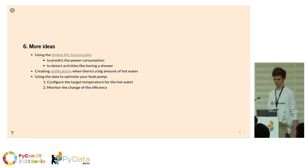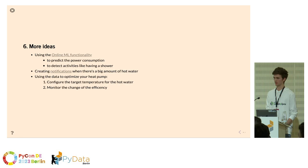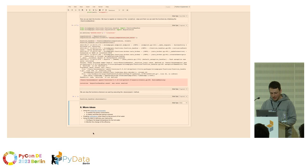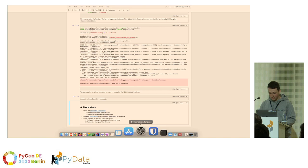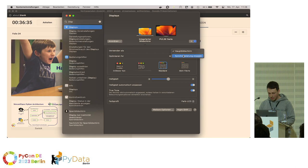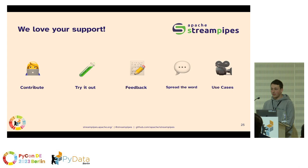That's all for this demo. There's a lot more you could do: you could use the online machine learning functionality to get more information about the data, you could easily create notifications with StreamPipes, and you could use this data to optimize your heat pump by changing configurations and monitoring changes in efficiency. This highlights the powerful tools available for analyzing data in Python — StreamPipes as a tool to easily get access to data from industrial contexts, and then using the power of Python to create amazing results.